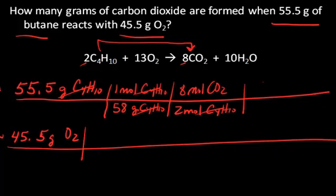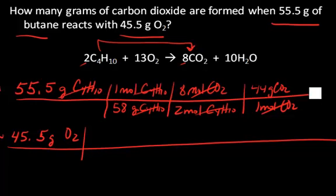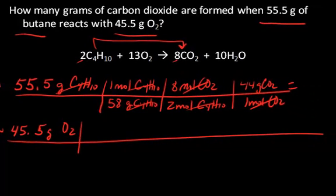Then I convert back to grams of product using the molar mass of carbon dioxide. When I do the calculation, I get 168 grams of carbon dioxide. That sounds a bit high, especially since I started with way less product, pretty much impossible. So let's see how much carbon dioxide I form if I assume I have 45.5 grams of oxygen and plenty of butane.